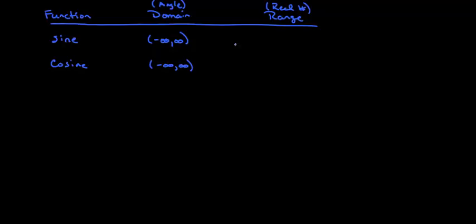What about the range? Well, sine, the output, the things that can come out of sine. So if you think about sine as like a function, as like a box. An angle, we'll call it theta, goes in. What comes out? Well, if you think about the way the unit circle works,